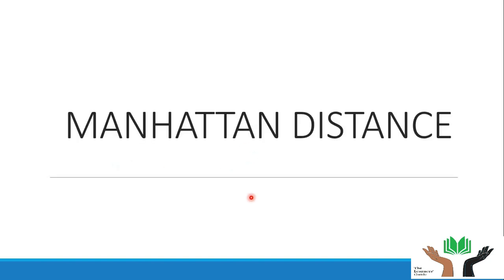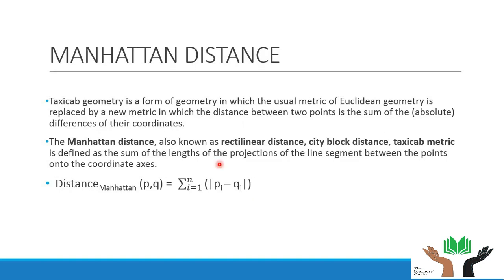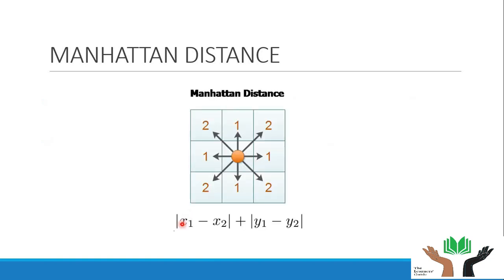Next comes the Manhattan distance. Manhattan distance is also known as rectilinear distance, city block distance, taxicab metric, and so on. It is calculated by the sum of the absolute differences of their features or coordinates. If we take two points x1, y1 and x2, y2, then the Manhattan distance between them is given as the absolute value of (x1 minus x2) plus the absolute value of (y1 minus y2).